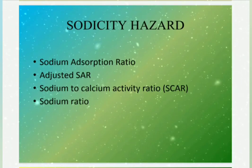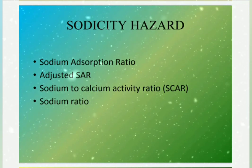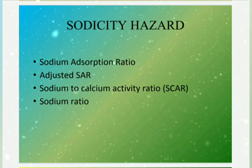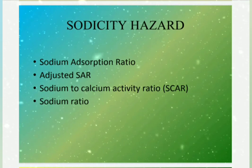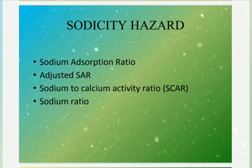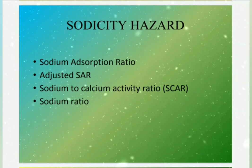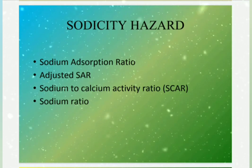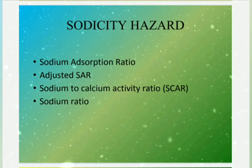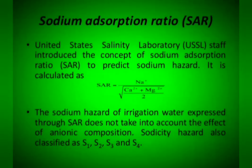Sodicity hazard. It is very dangerous to soil because sodium absorbs onto the soil cation exchange sites, causing soil aggregates to break down — that is deflocculation — sealing the pores and making it impermeable to water flow. Sodicity hazard can be calculated by sodium adsorption ratio, salt index, and sodium ratio. Sodium adsorption ratio is calculated as sodium divided by the square root of calcium plus magnesium divided by 2.